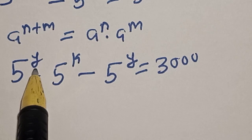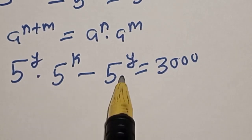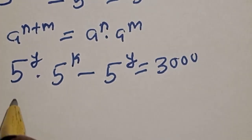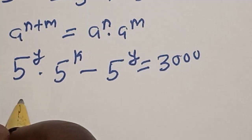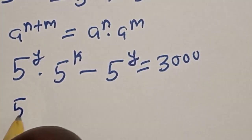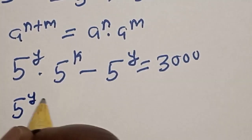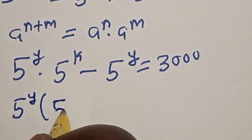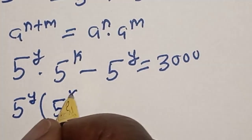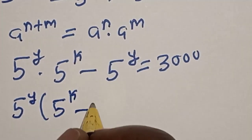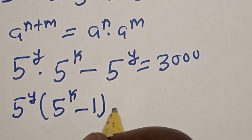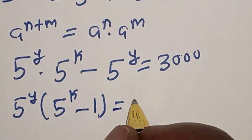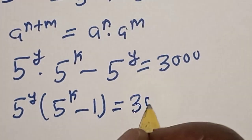Now we have 5 raised to power y appearing twice, so let's bring it out as a common factor. This gives us 5 raised to power y multiplied by the quantity 5 raised to power k minus 1, equal to 3000.